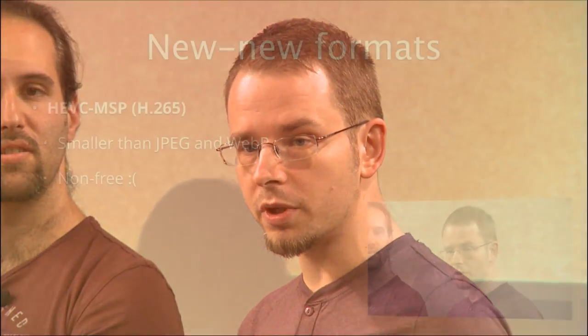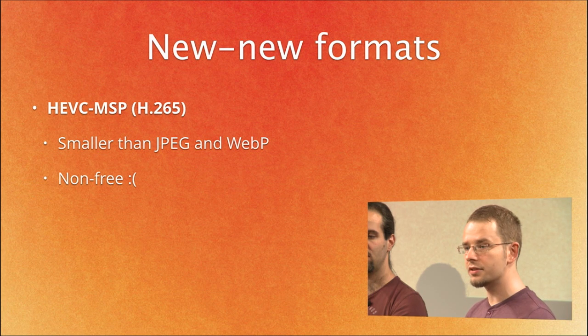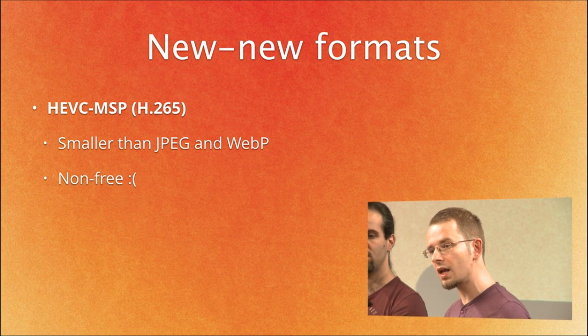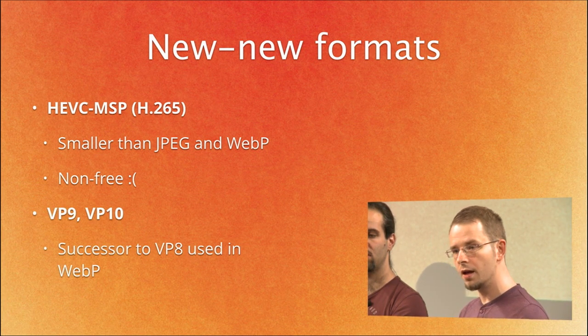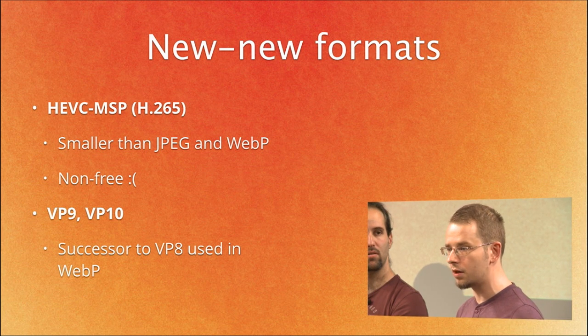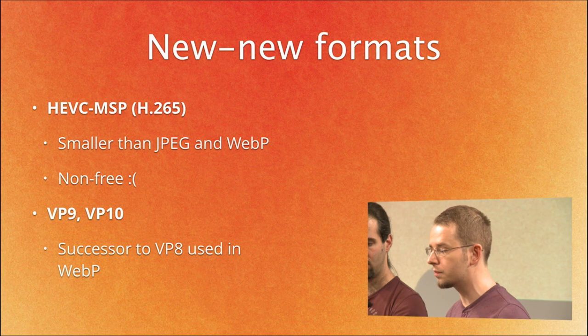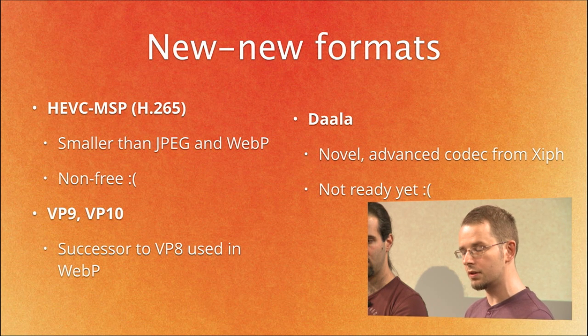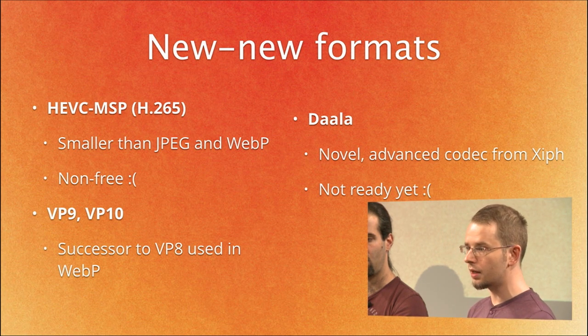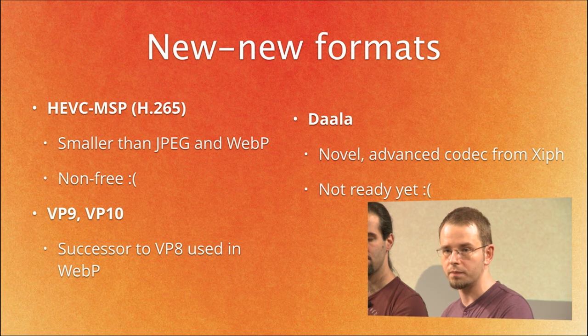There are even newer next-generation formats that may or may not arrive. H.264 is the most popular video codec on the web today and its successor could potentially be used as a static image format — in tests it looks really good — however, it's a non-free, patented codec, which is a big problem for open source software. The VP family of codecs is being developed and extended and is looking really well. There's also an experimental new codec from Xiph and Mozilla called Daala, but it's still too early to say whether it will be successful.